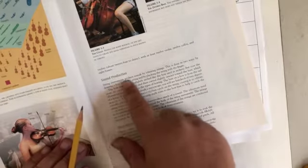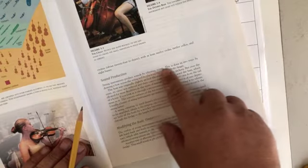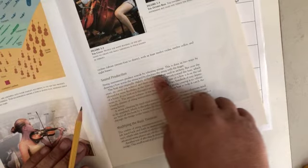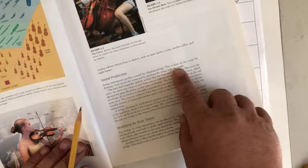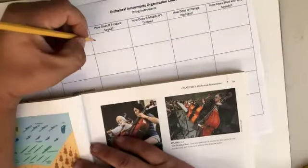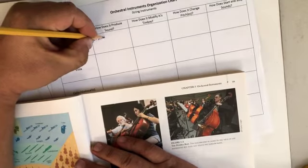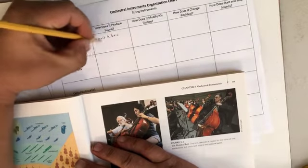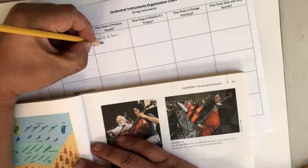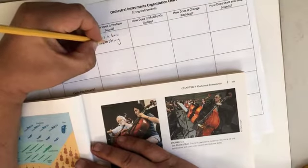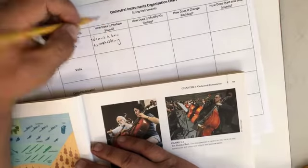Right here it says string instruments produce sound by vibrating strings. This is done two ways: by drawing a bow across the string or by plucking the string with the finger. Okay, so that's what I'm gonna write here. I'm making myself a study guide.